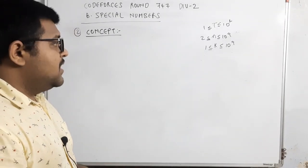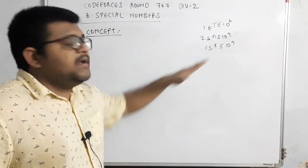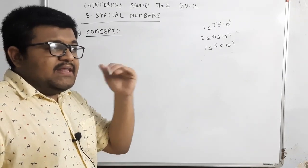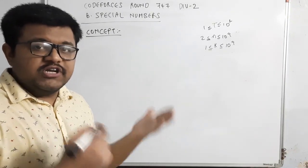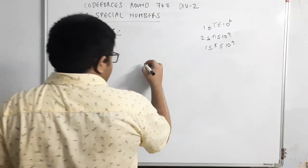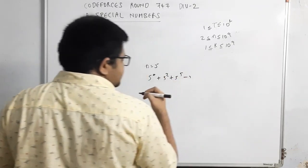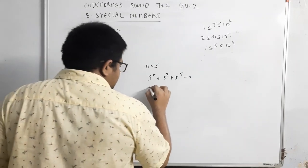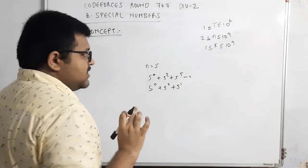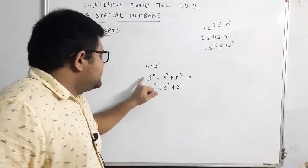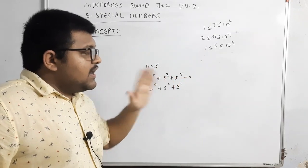Now let's discuss the concept. We need to find all special numbers with respect to n — that is, all numbers which can be represented as a sum of distinct powers of n. For example, if n=5, then 5^0 + 5^2 + 5^5 is a special number and will be counted in the sequence. But 5^0 + 5^0 + 5^1 is not, because the powers are repeating. So we need to find the kth such special number.